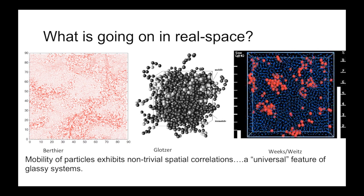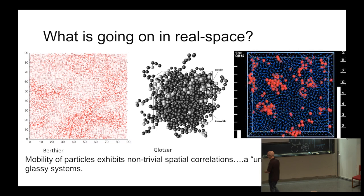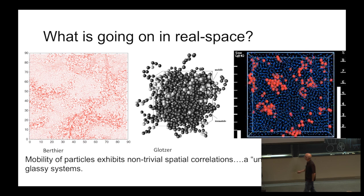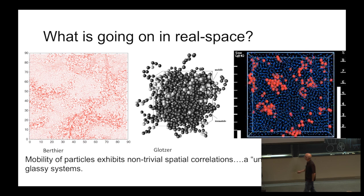Now let's look at all the particles, not just the single-particle probability distribution. You start to see the same kind of collective phenomena. This is from a simulation that Ludovic did. If you look at the displacement fields — mapping out how far particles have moved in some interval — what you see is that in space there's a propagation of large-amplitude motion that, on some time scale, may actually extend over very, very large distances.